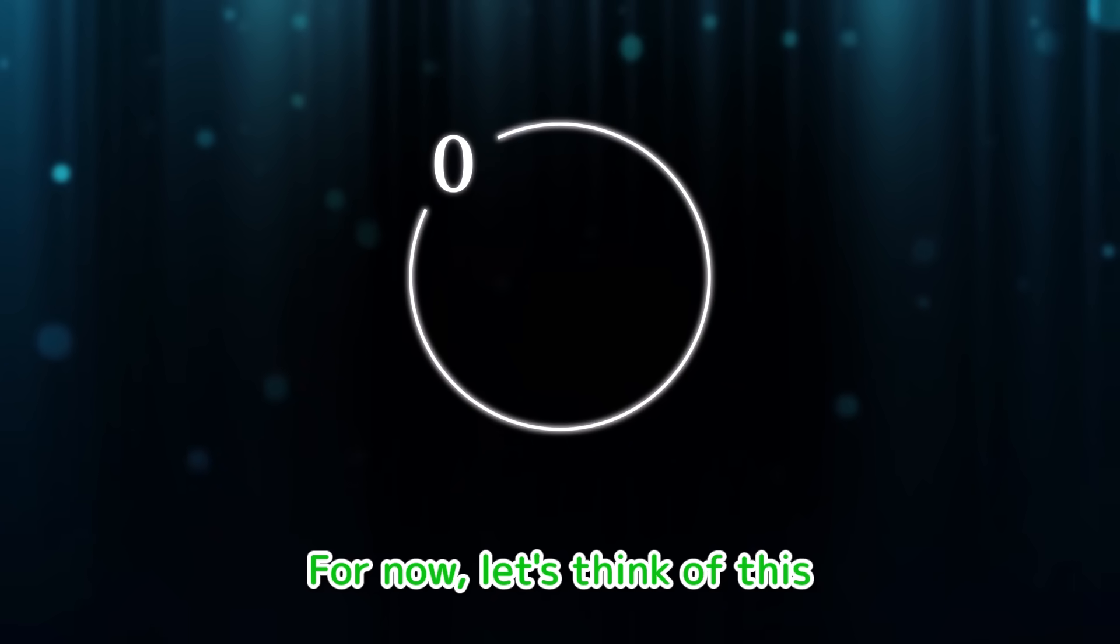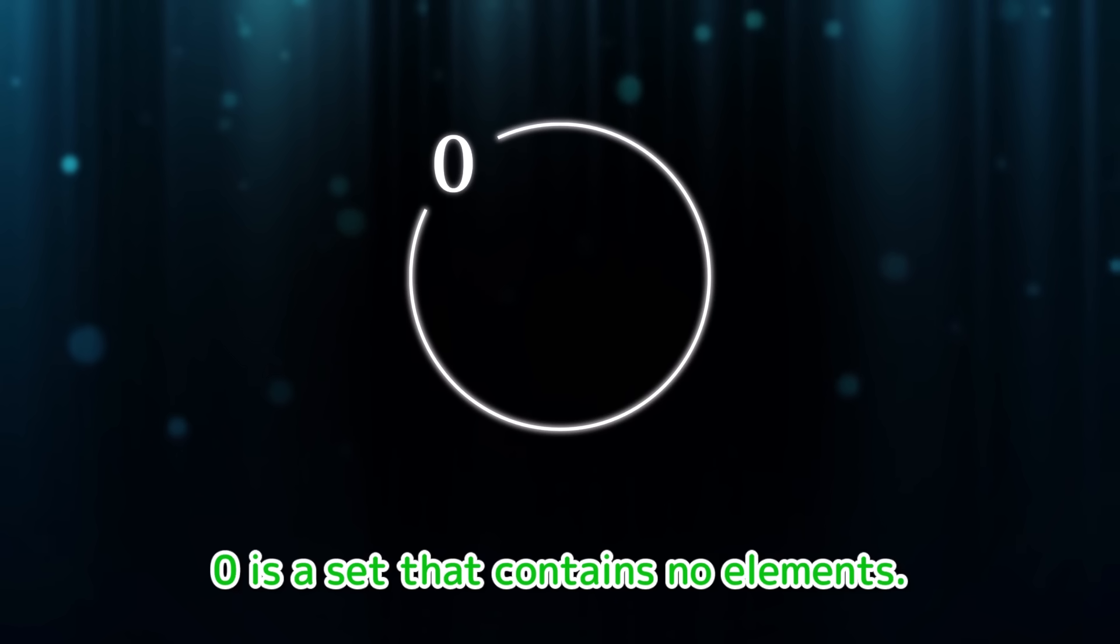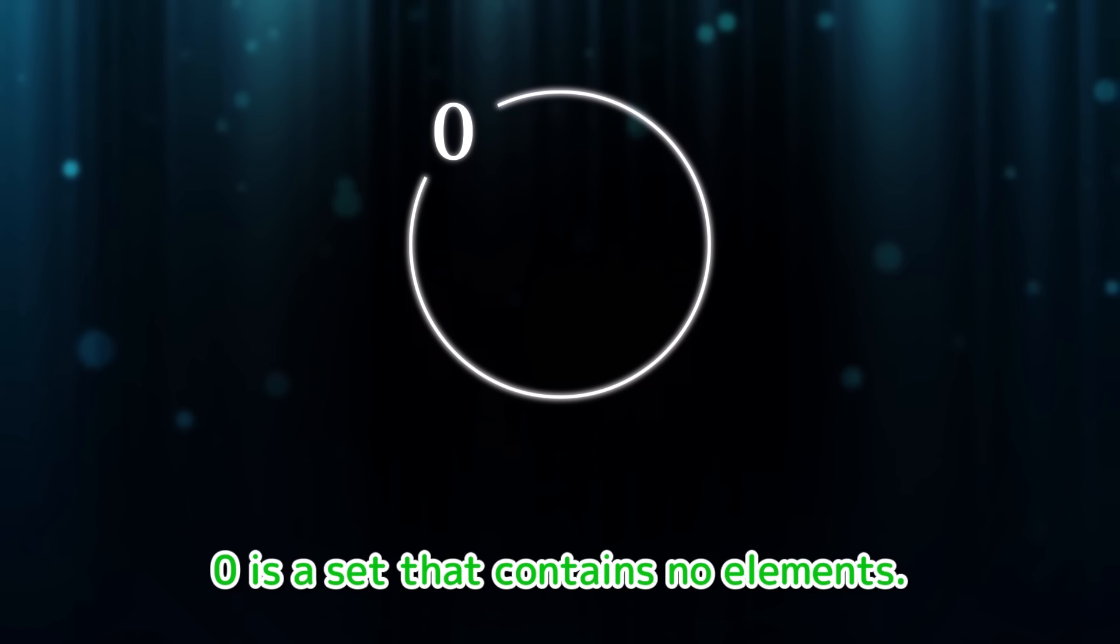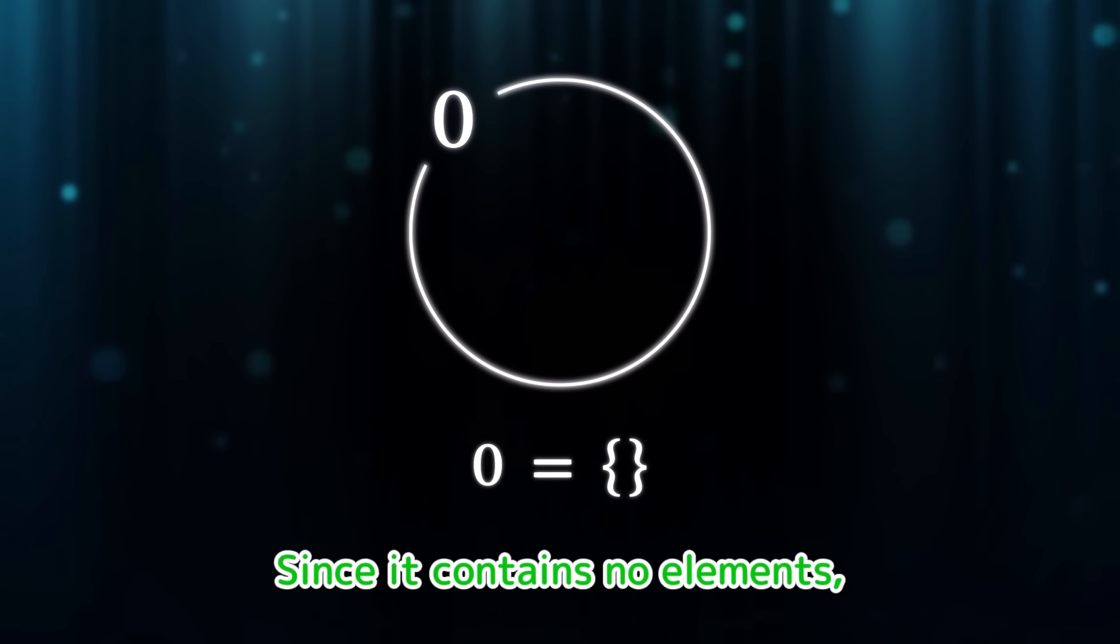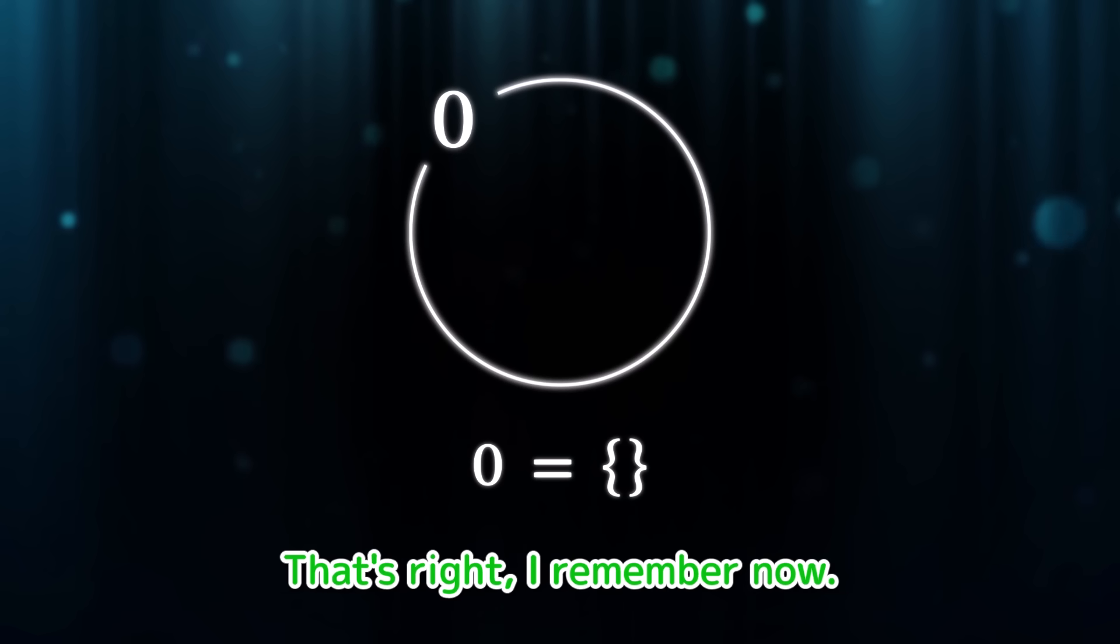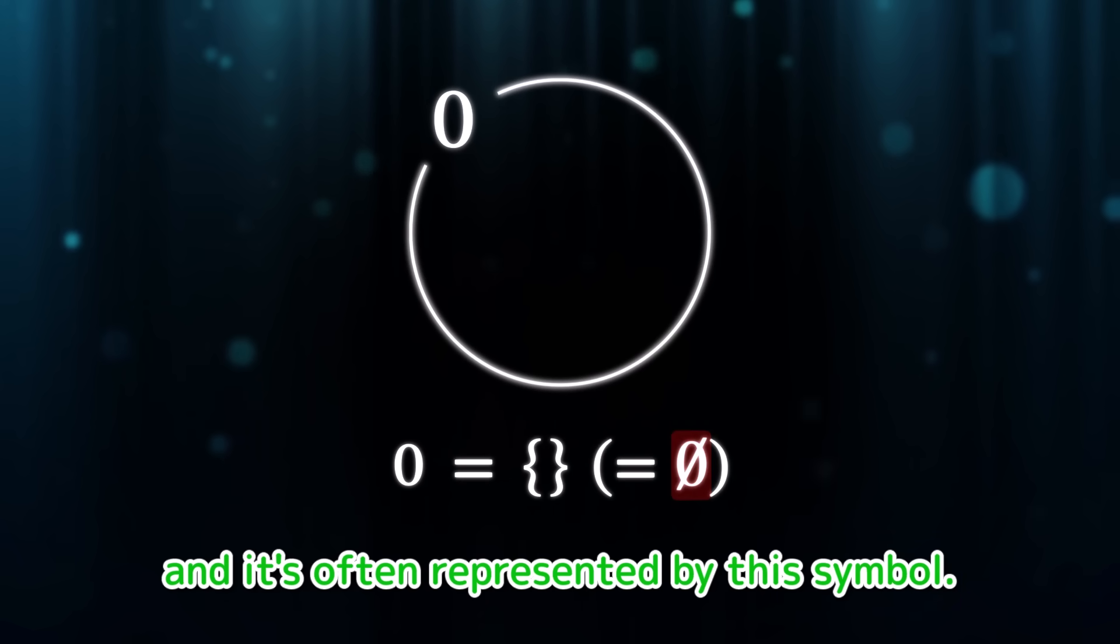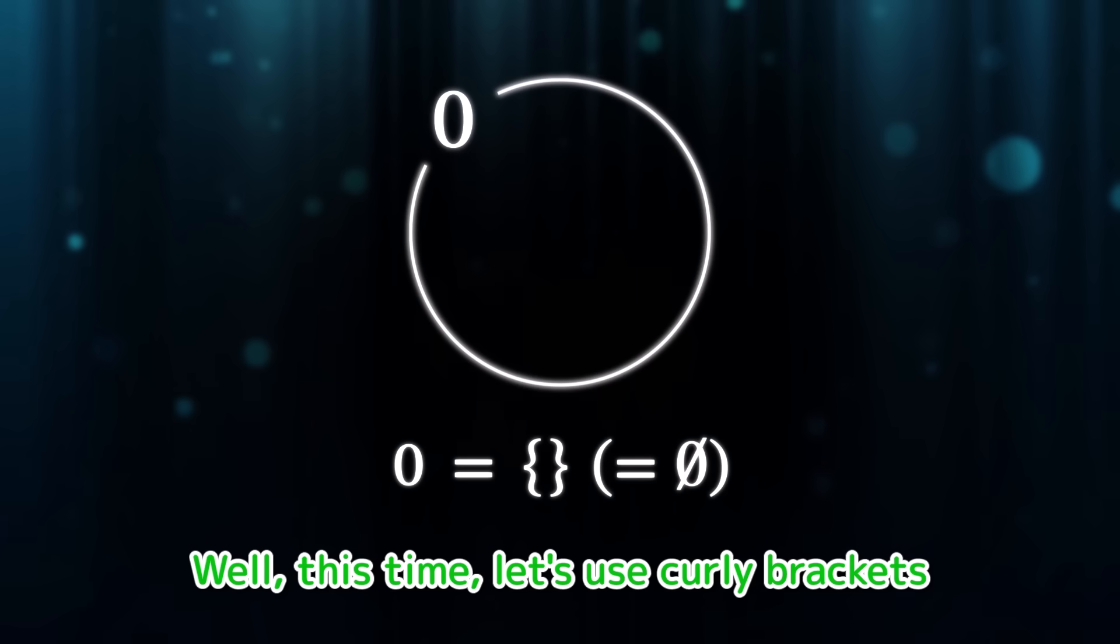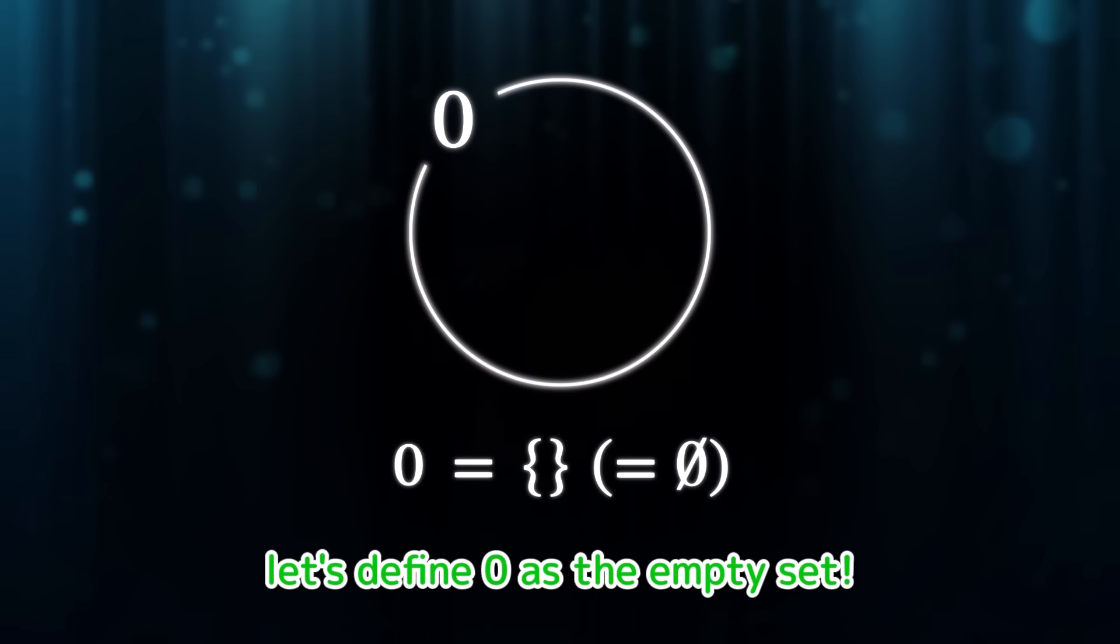For now, let's think of this as a collection of things, a set. Zero is a set that contains no elements. Using curly brackets, it can be written like this. Since it contains no elements, there's nothing inside the brackets. That's right, I remember now. This is called the empty set, and it's often represented by this symbol. Well, this time, let's use curly brackets to represent the empty set. In short, let's define zero as the empty set.